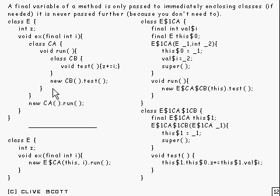As you can see, this class CA is instantiated inside this method EX.